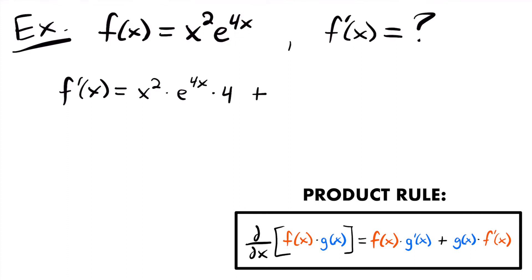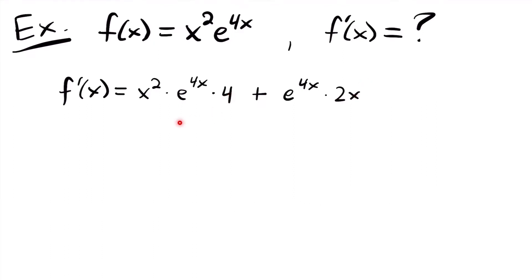Now we add our second function e to the power of 4x times the derivative of our first function x squared. The derivative of x squared, using the power rule, is 2x — we multiply the 2 down and subtract 1 from the exponent. So simplifying, bringing the 4 to the front, we have 4x squared times e to the power of 4x plus 2x times e to the power of 4x.